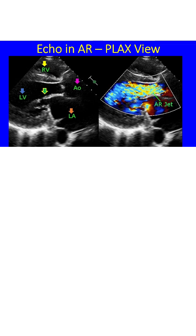Mitral valve leaflets seen in open position between the left ventricle and the left atrium are thickened. The large aortic regurgitation jet can be seen as a mosaic jet in the left ventricular outflow tract, anterior to the anterior mitral leaflet.